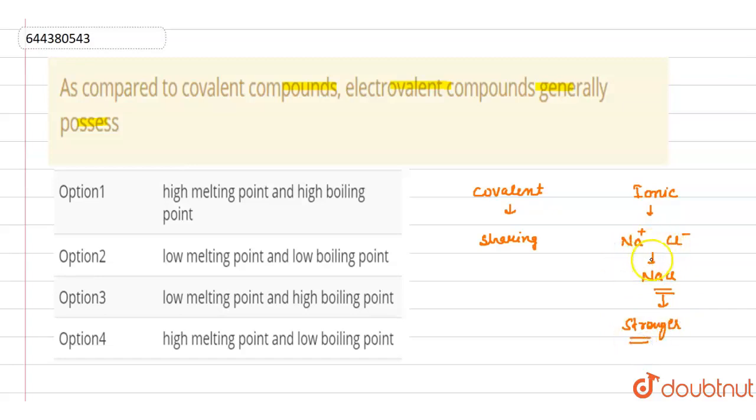Like NaCl, ionic compounds also form a three-dimensional structure and the bonding between them is stronger. Due to this stronger bonding, in case of ionic compounds, these have high melting and boiling points. So due to this reason, as compared